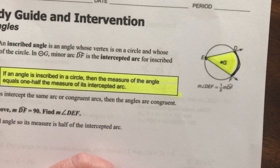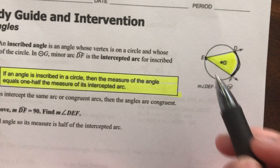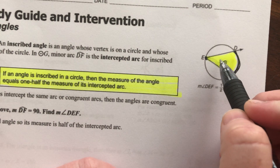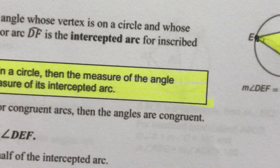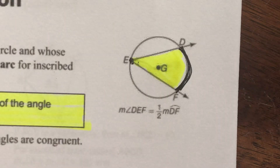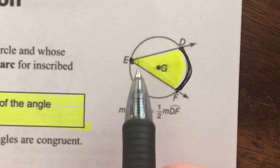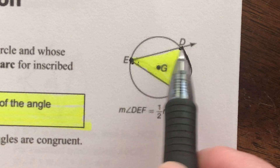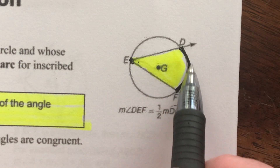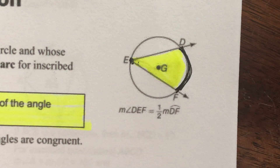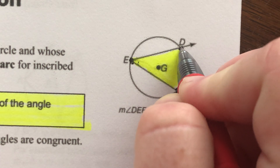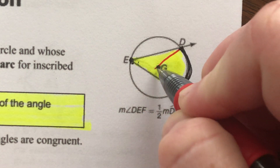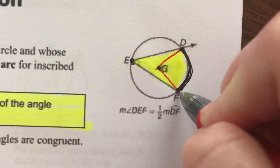The rule here is that the measure of this inscribed angle is half the measure of the intercepted arc. How do we get the measure of the arc? The measure of an arc is the same as the measure of its central angle.